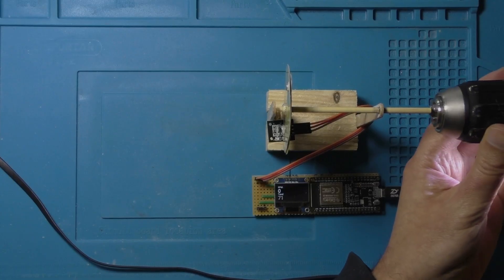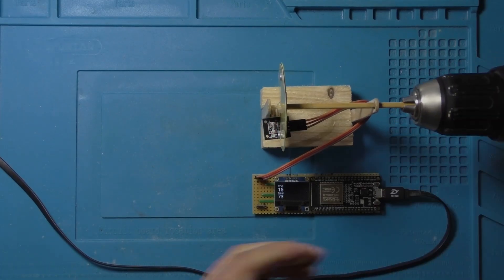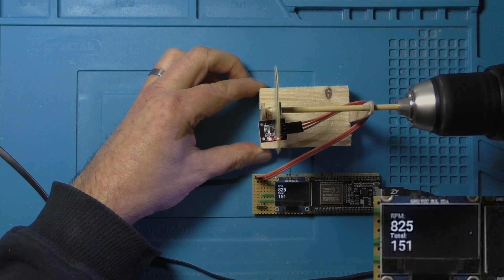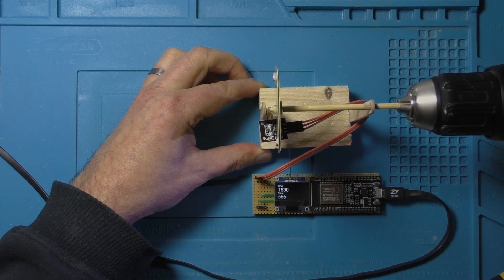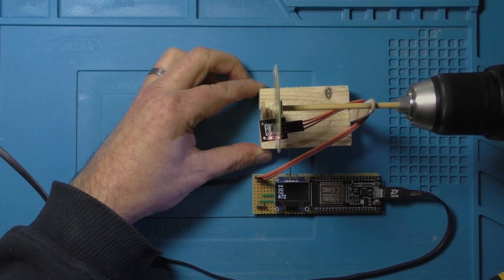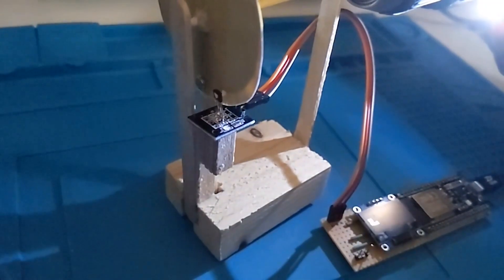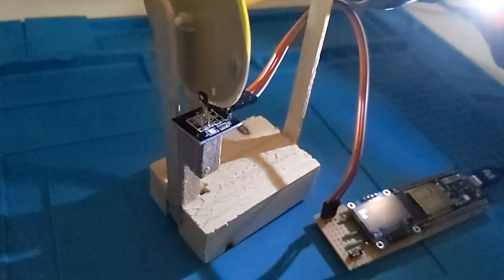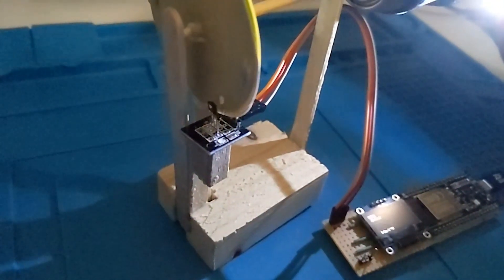But for now just as a proof of concept I'm just attaching a drill to this and just spinning it really fast, well as fast as the drill will go, and it all seems to hold up all right. And here's a slow-mo. See it flashes twice every time a magnet goes past.